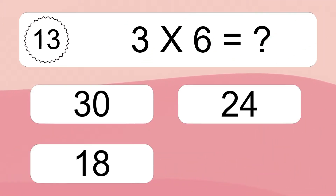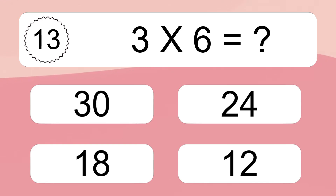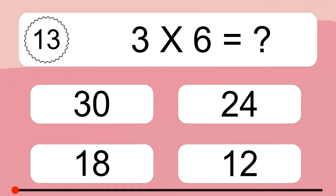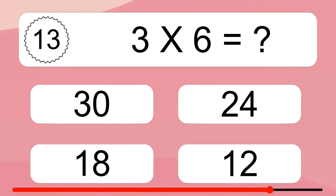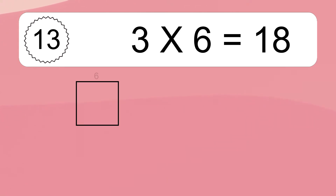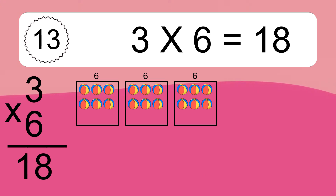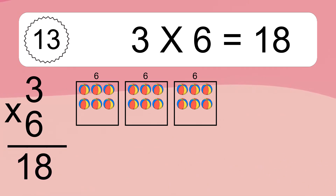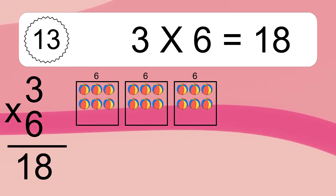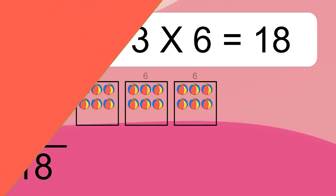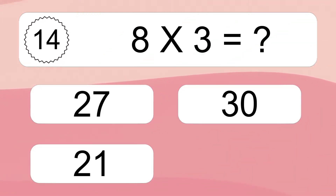Three times six equals what? Three times six equals eighteen. We have three boxes, and each box has six colorful balls inside. If you count all the balls in all the boxes together, you will have three times six balls. This equals eighteen balls.